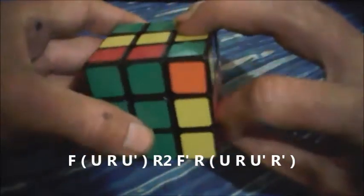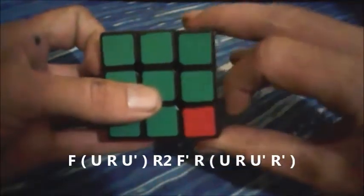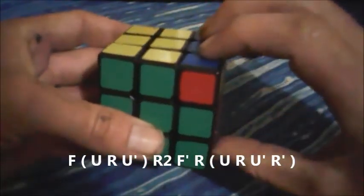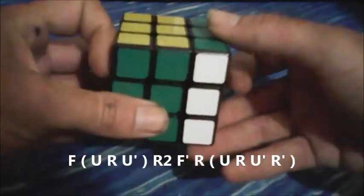So we go front, U, R, U prime, R2, F prime, R, then we go U, R, U, R, U, R, U prime, R prime.